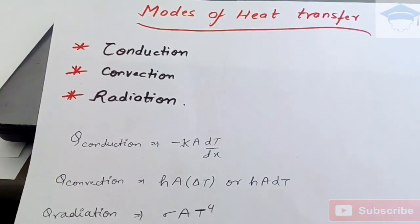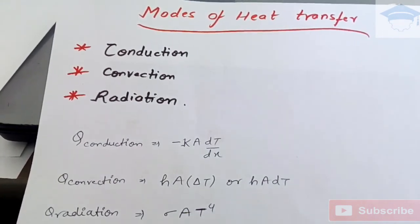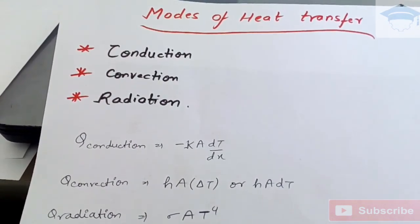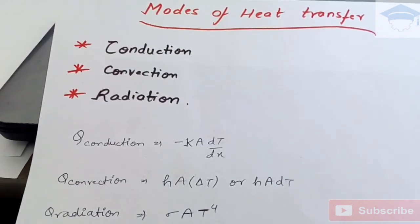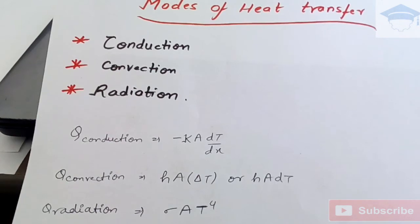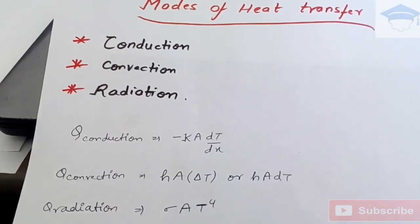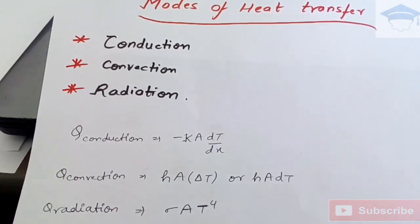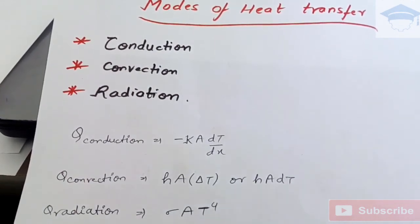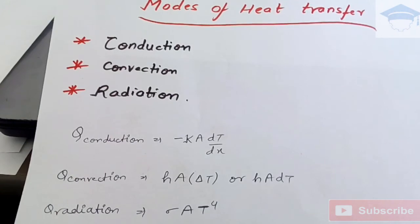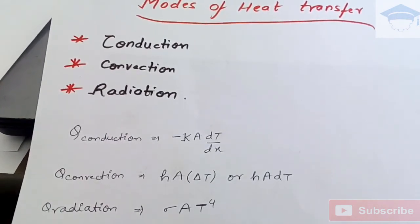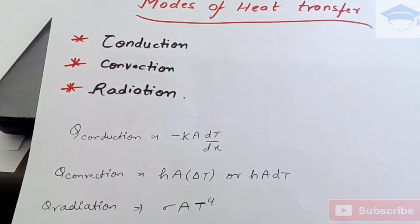Now convection. Heat transferred by convection is given by h A delta T or we can say h A dT, where h is the heat transfer coefficient and its unit is watt per meter square Kelvin. A is the area, the surface area. Now here A is the surface area. In conduction, A is the cross-sectional area. This is the difference. A is the surface area. Delta T or dT is the temperature difference between the two mediums.